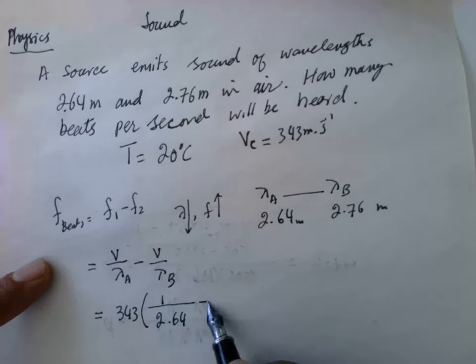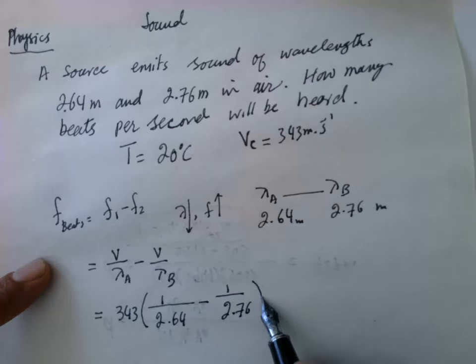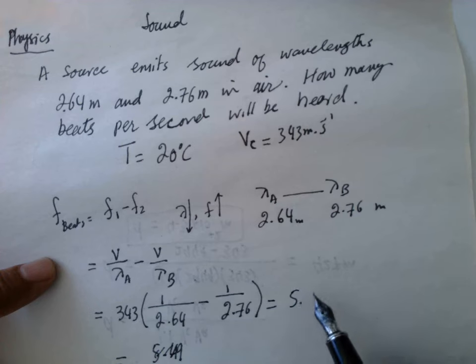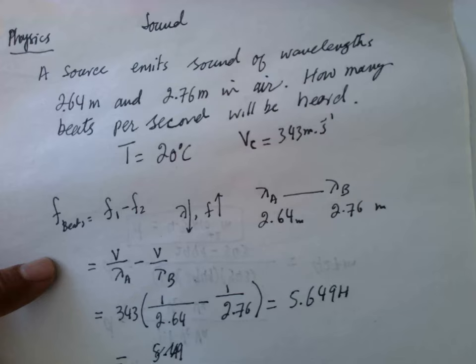1 over 2.64 meters minus 1 over 2.76 meters. If you solve this, that will give you the value which is equal to 5.649 hertz. So the beat frequency is equal to 5.6 hertz.